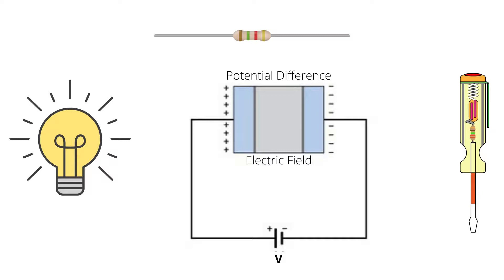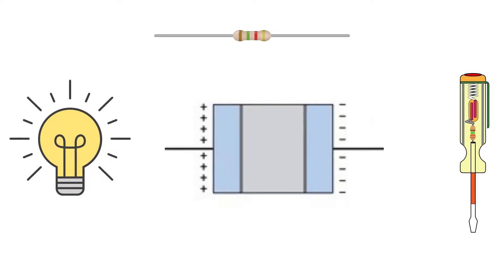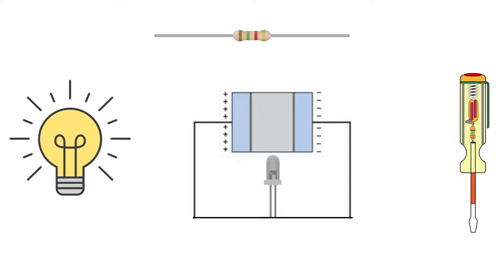Now because of the potential difference, electric field gets developed between the two plates. In this way, capacitors store energy in the form of electric field. Even if we remove the voltage source, the charges developed across the two plates will remain intact.